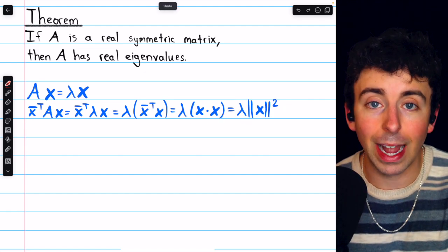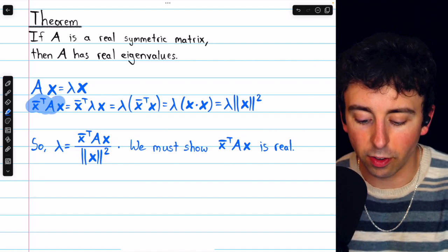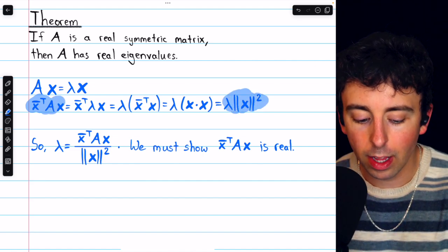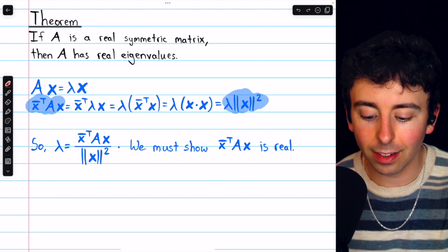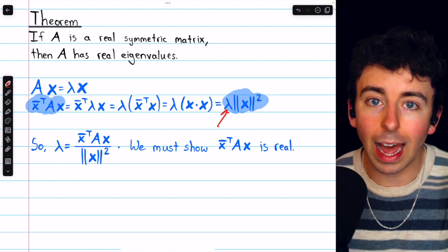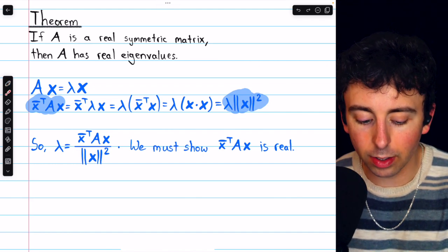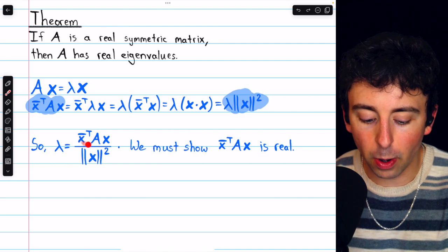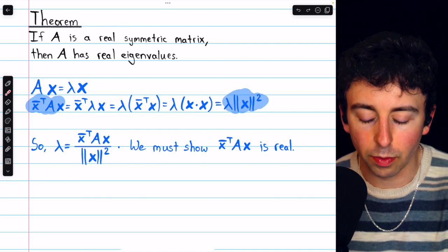Now consider the far left part of this string of equations and the far right part. We can divide both sides by the square of the magnitude of x in order to get lambda, the eigenvalue, by itself. Doing that, we have that lambda equals x conjugate transpose Ax divided by the square of the magnitude of x.